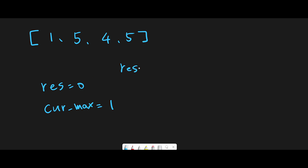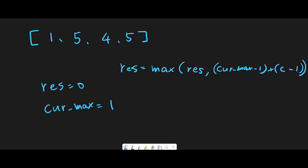The result is the return value. Each iteration we compute max of current result versus (current_max - 1) * (current_number - 1). First, I initialize current max with 1, because index 0 is 1. We start iteration from index 1. Current result is 0, and current max minus 1 is 0, multiplied by current number 5 minus 1, which is 4.